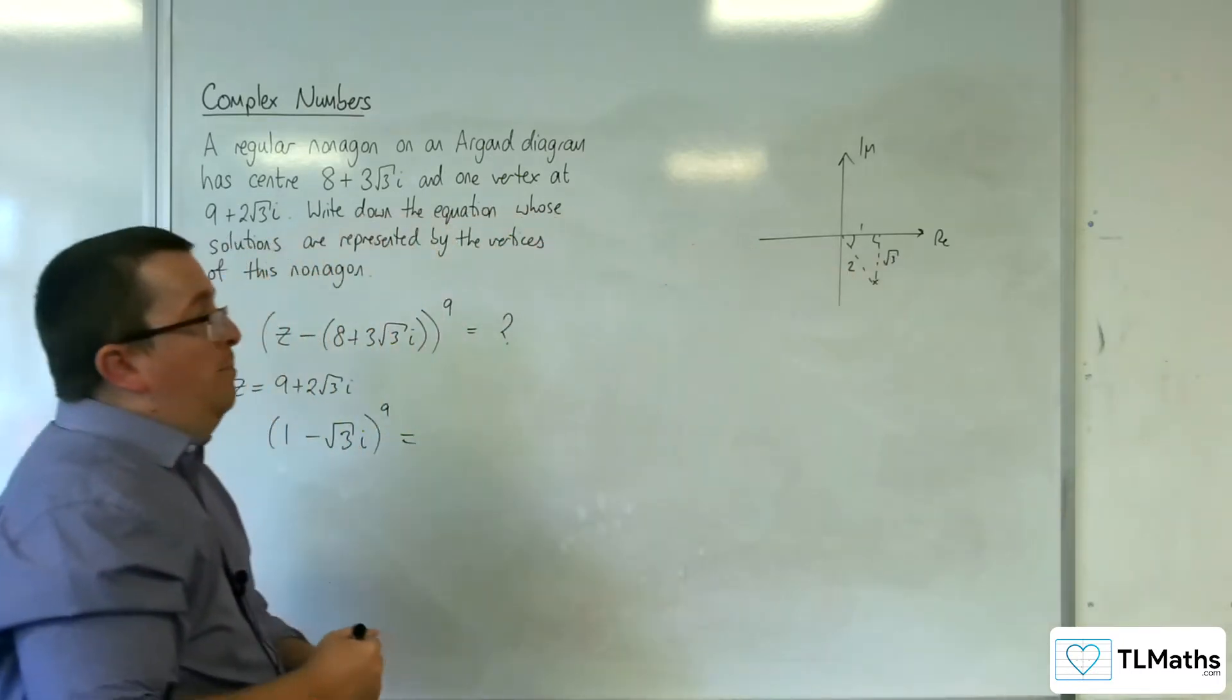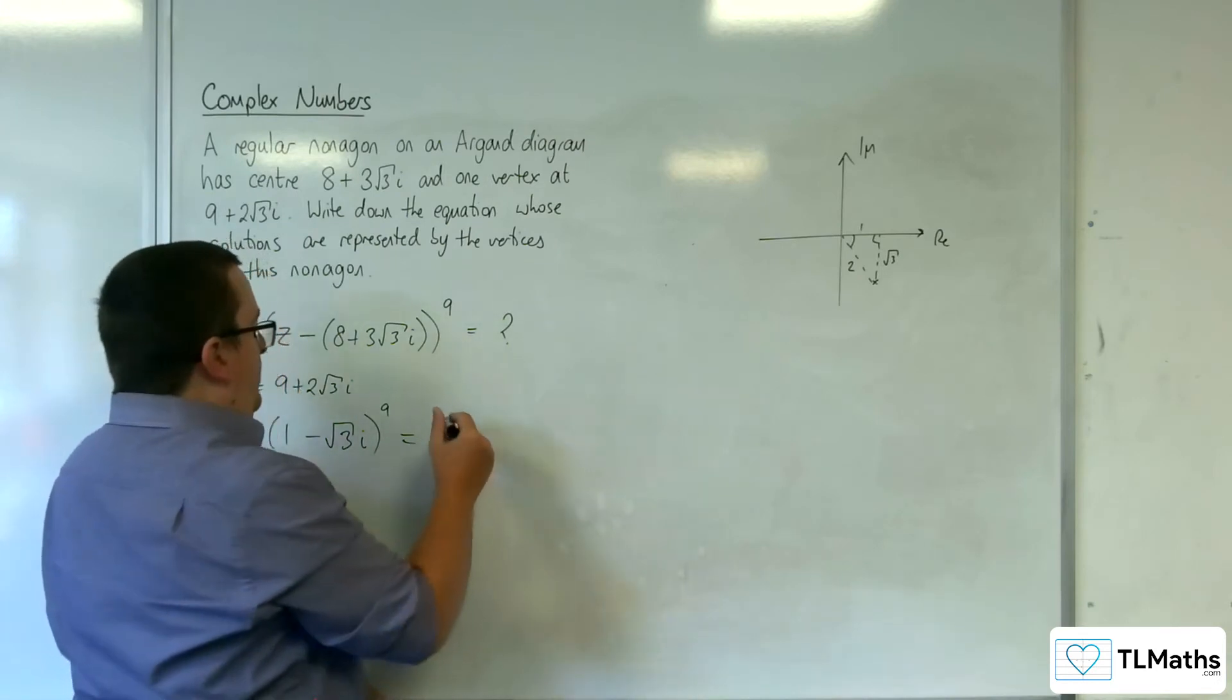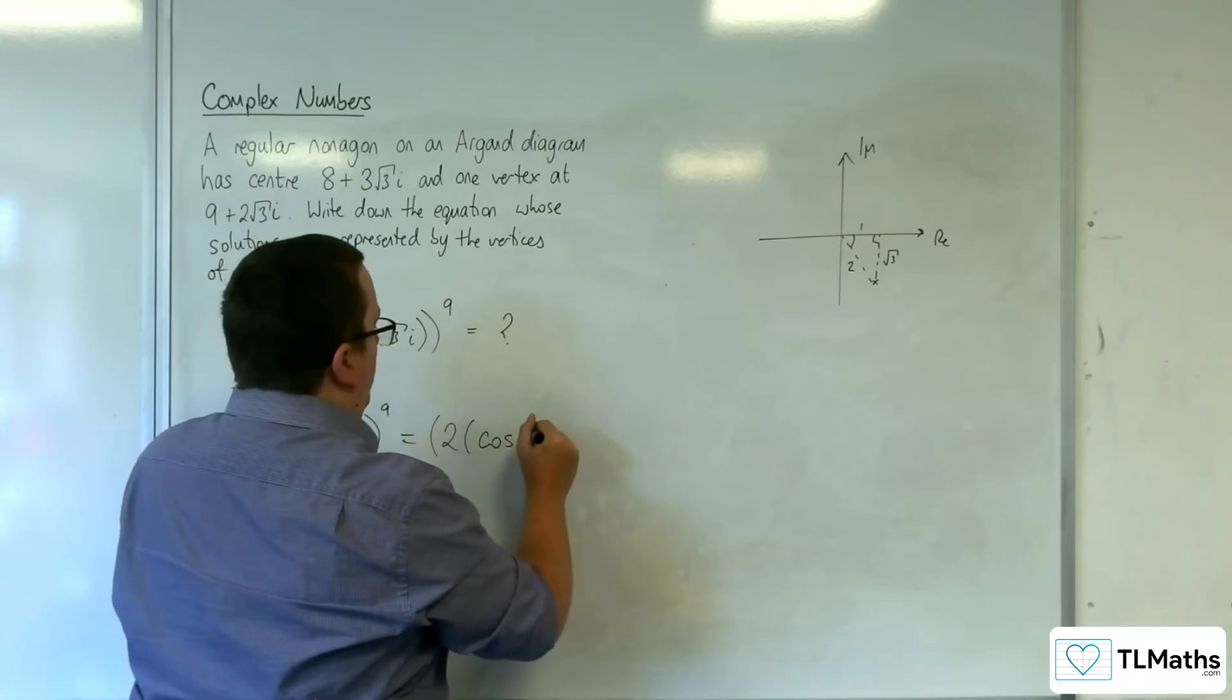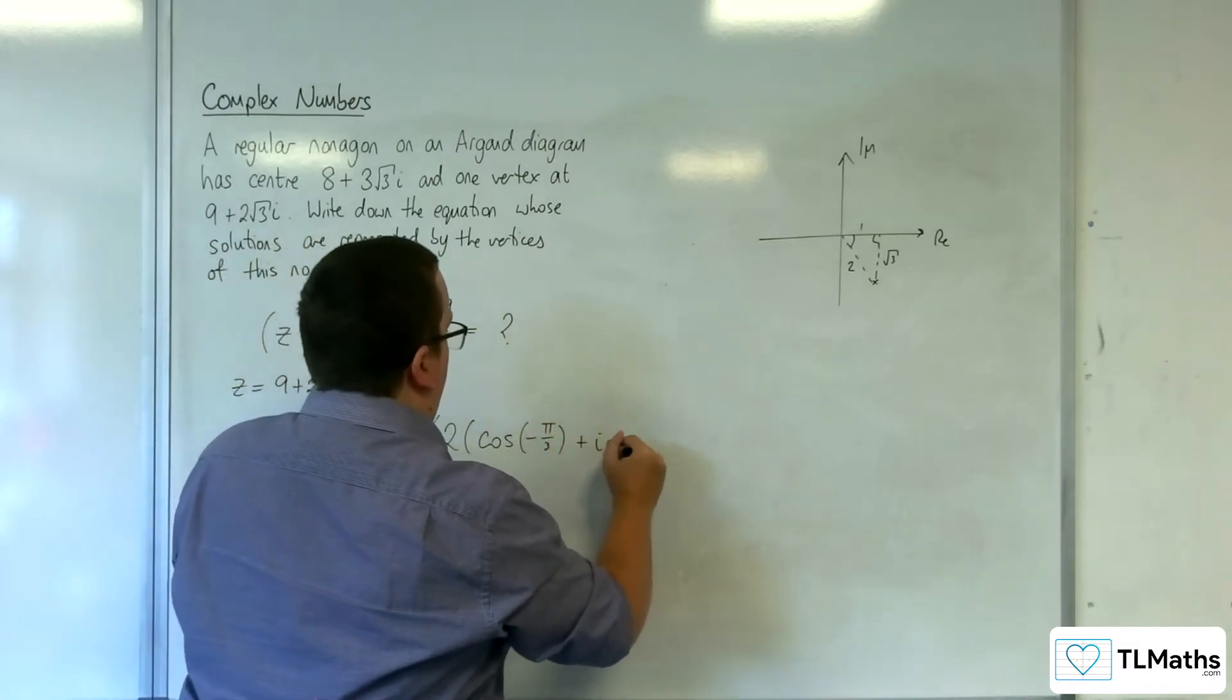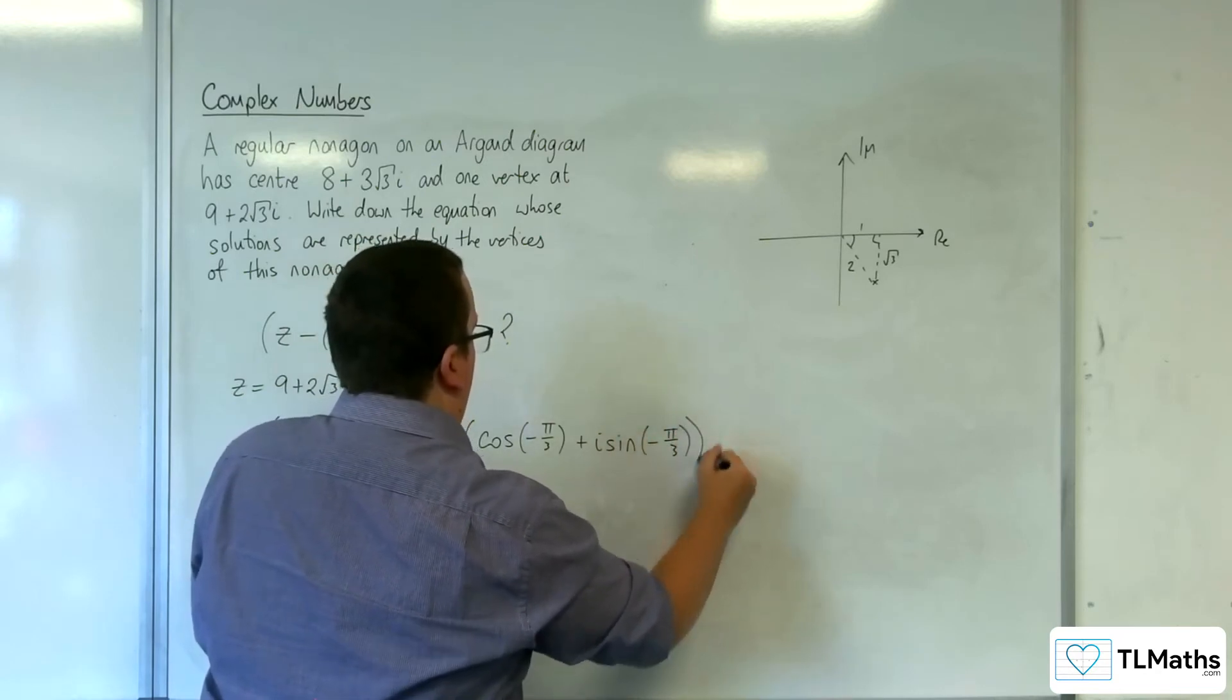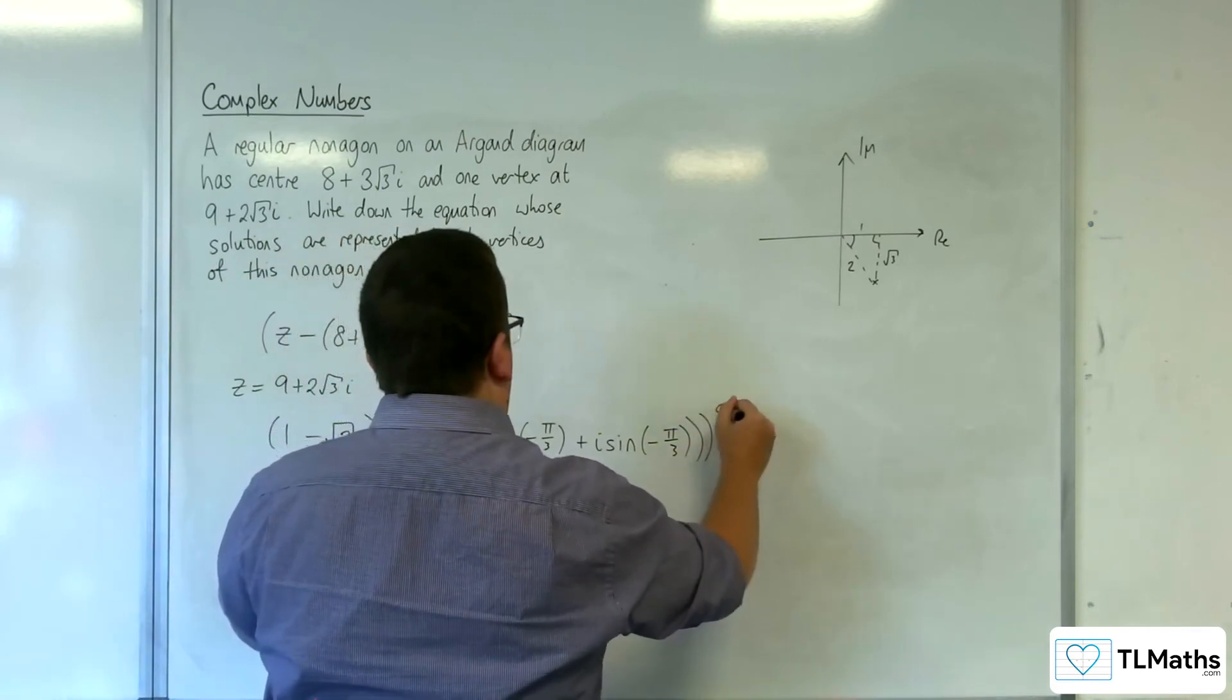So I know that I can write this as 2(cos(-π/3) + i sin(-π/3)), that's that 1 to the power of 9.